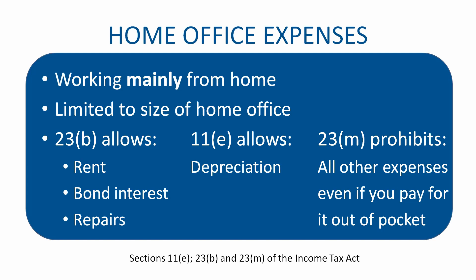Under section 11E you can also deduct depreciation — for example, if you bought a computer or office furniture you can deduct depreciation against your employment income. However, section 23M prohibits employees from deducting trade expenses. If you're a normal employee — not on commission and not an independent contractor — you can't deduct any other expenses beyond those listed. Unfortunately this means things like internet and telephone costs paid out of pocket generally can't be deducted, though that may need to change.